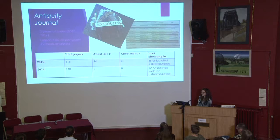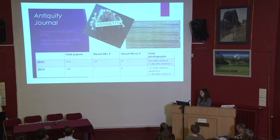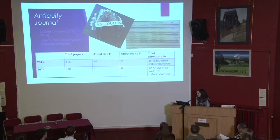For Antiquity Journal, I analyzed two years of issues from 2014 and 2015, a total of 12 issues. In 2015, the papers published were 115, and 14 of them were about human remains with pictures, and just two with no pictures. 36 pictures were of articulated human remains and just five were disarticulated.